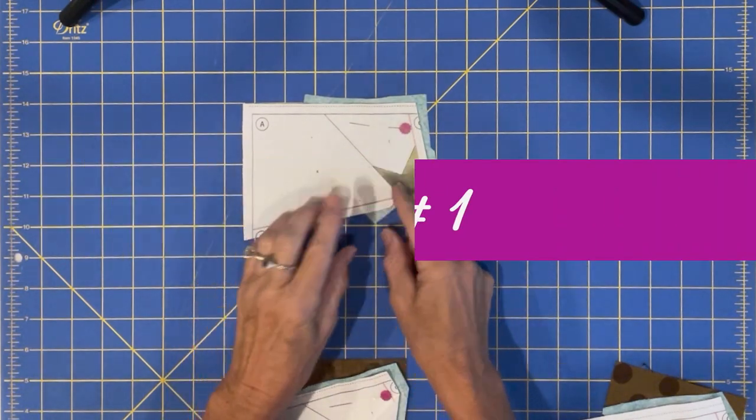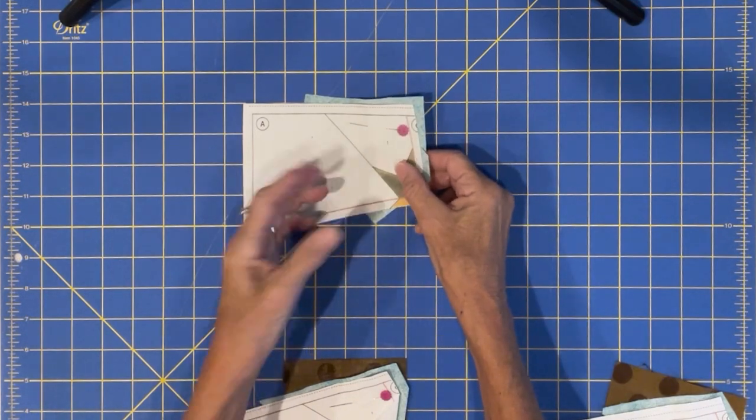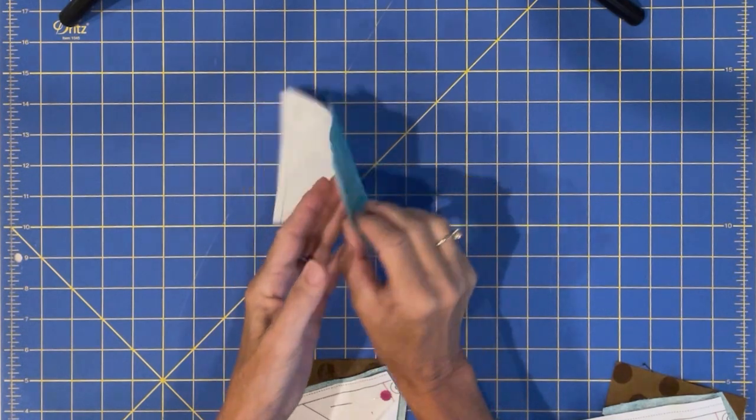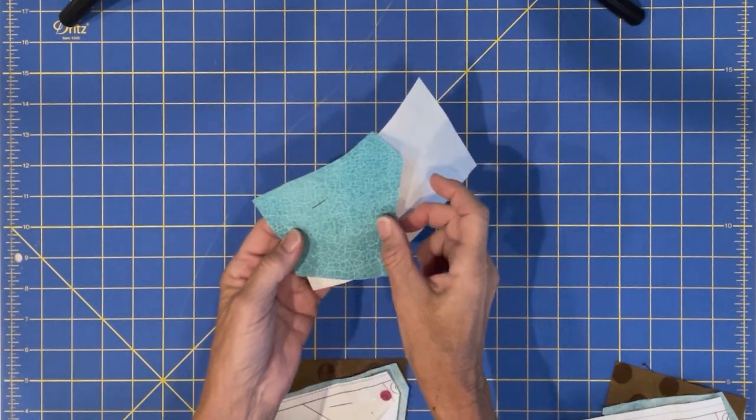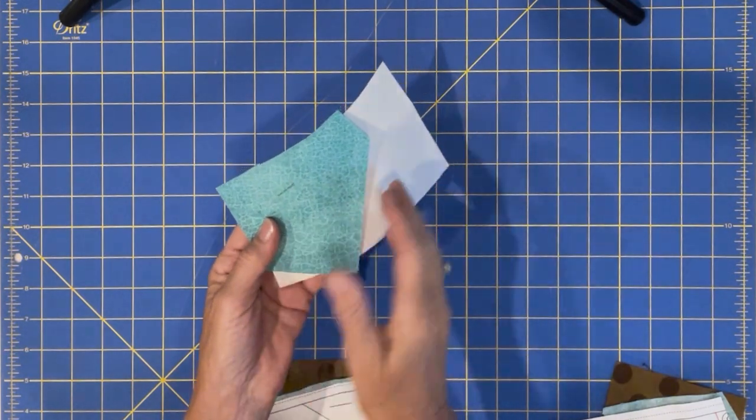Tip one is on piece one, your fabric doesn't need to be anything but pinned. You're not sewing piece one. Piece one is simply pinned. Some people use a little dab of glue and you're putting the good side of the fabric away from the paper.